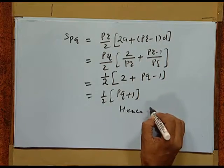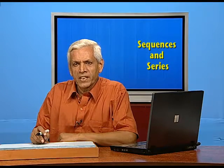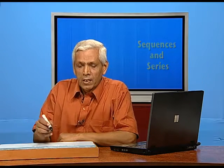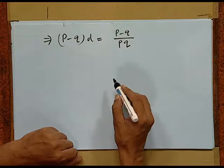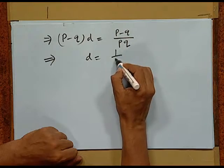Note that in this problem, both a and d were expressed in non-numerical form, yet we could solve it. Remember that in any problem, we must look for a and d. Here, (p − q)d = (p − q)/(pq), and since p ≠ q, we cancel to get d = 1/(pq).